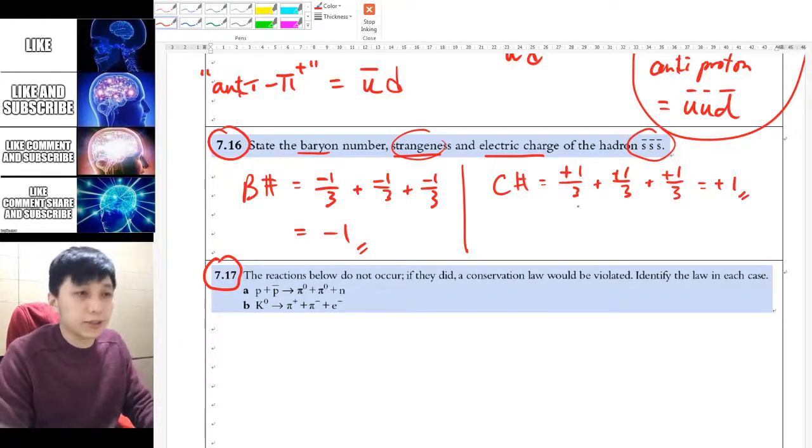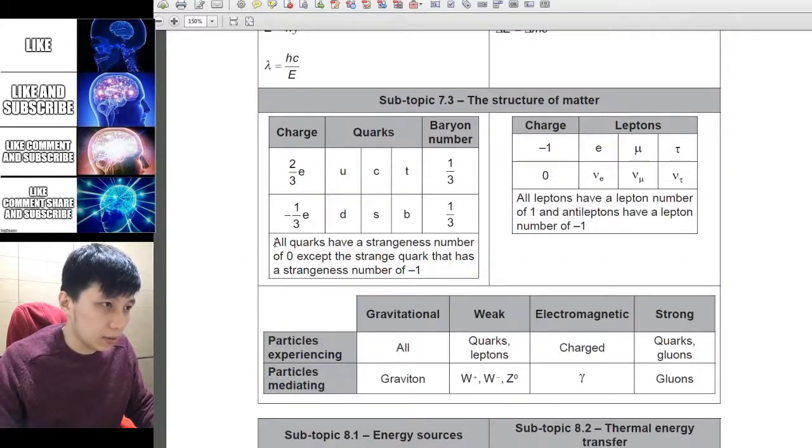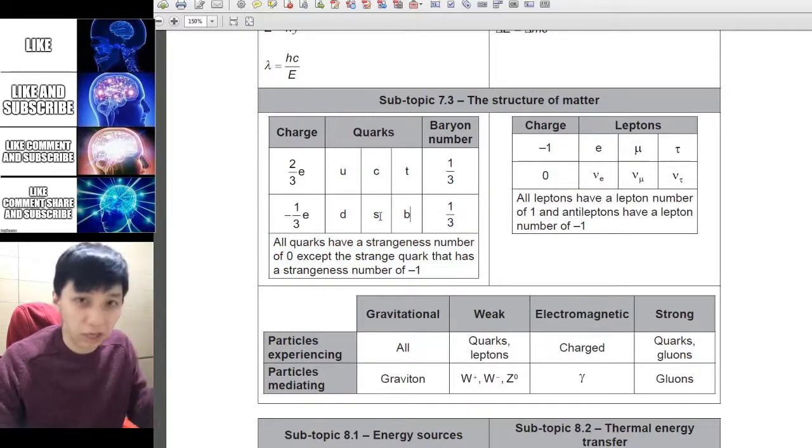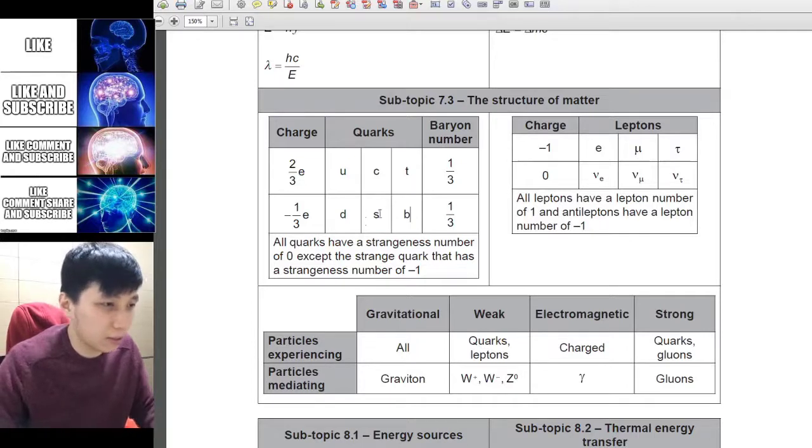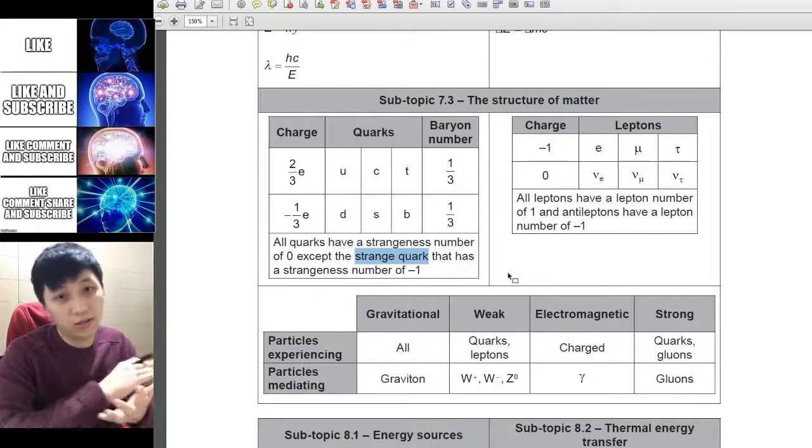Lastly, strangeness. Something you need to read from the data booklet simply, and you don't have to memorize it. According to the sentence here, all quarks have strangeness number of 0—that means you just ignore it. For all these 6 quarks, you only have to care about strange quark for its strangeness, obviously. So nothing complicated. For a regular strange quark, it has a strangeness number of negative 1. This is the game rule.